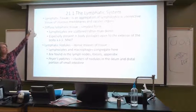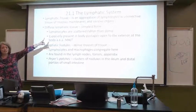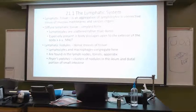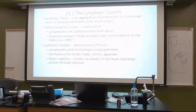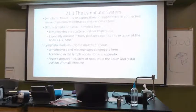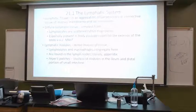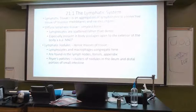We have our lymphatic tissue, and this is where we get an aggregation of lymphocytes. We're going to find them in connective tissue, we're going to find them in mucous membranes, we're going to find them in various organs. The goal is to hopefully have our cells ready for parts of our first and second defense, with the first, of course, being our skin.